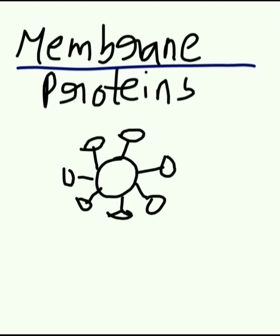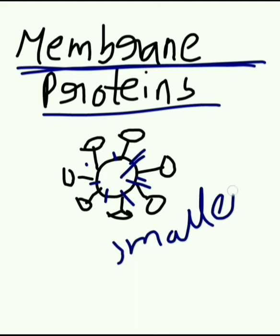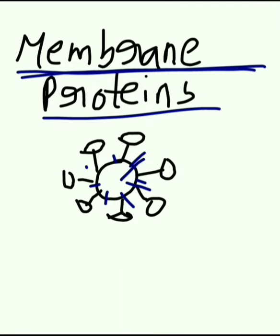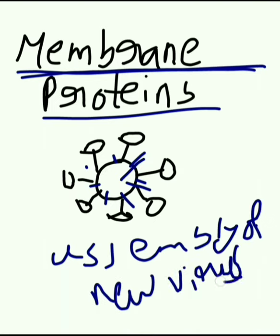The next structural protein is the membrane protein. Membrane proteins are the smallest of the major structural proteins on the viral membrane. These proteins help in the assembly of new virus particles once the virus has infected a cell.